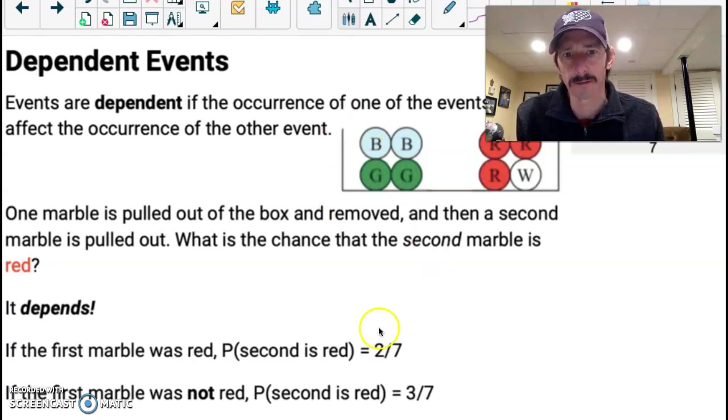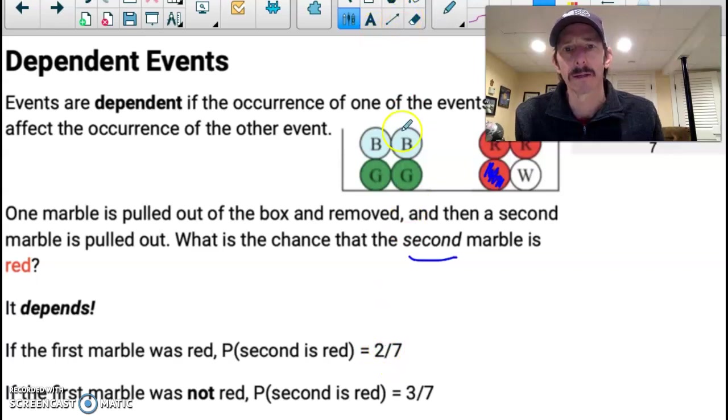So we left off. I was kind of rushing through this, but the reason it depends on what the second marble happens to be is because if the first marble I took out, so there's eight marbles in here, if the first marble I took out was red, then this guy's gone, right? And so now there's only seven marbles left. Two of them are red. So that's if the first one was red.